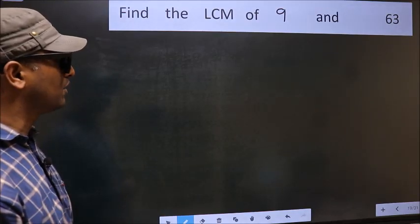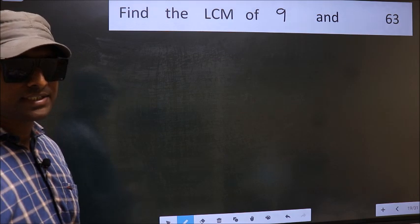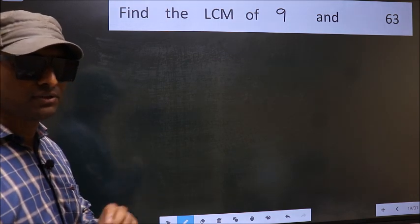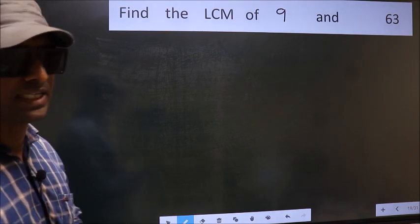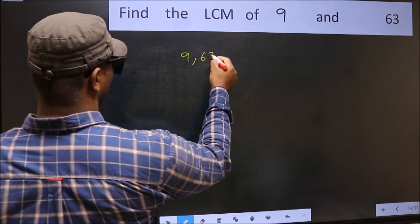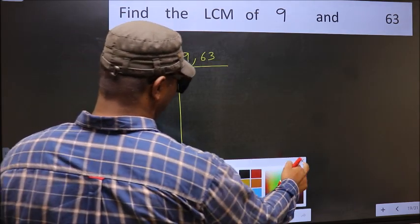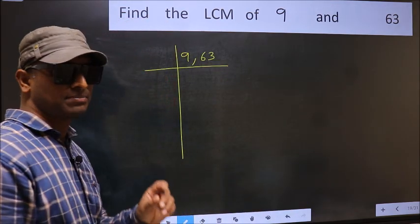Find the LCM of 9 and 63. To find the LCM, we should frame it in this way: 9, 63. This is your step 1.